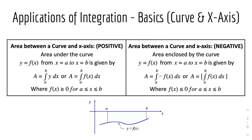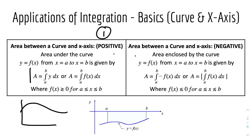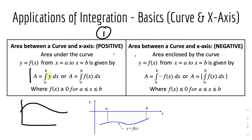We'll start off with some basics for the curve and the x-axis. Number one: the area between a curve and the x-axis where the curve is positive — like a positive curve here. The area under the curve y equals f of x from x equals a to x equals b is given by this equation, where y is basically the same as f of x. Notice how it's from a to b, with a at the bottom and b at the top, while f of x is greater than or equal to zero.